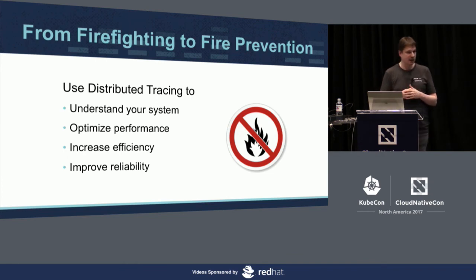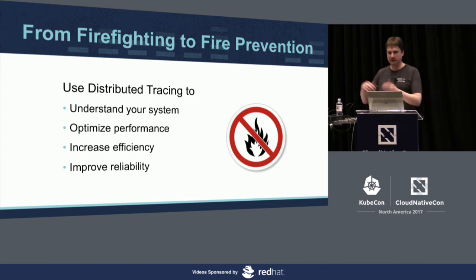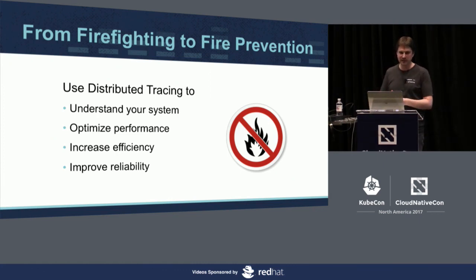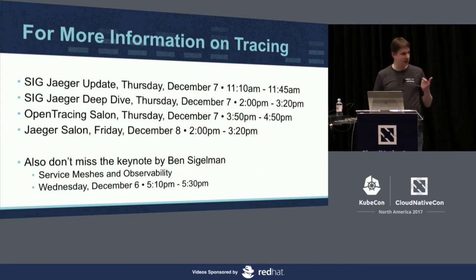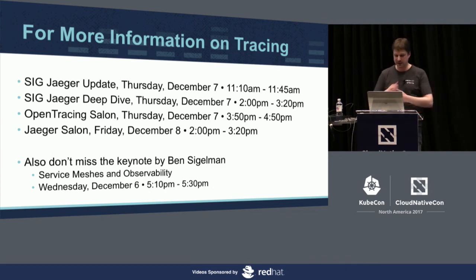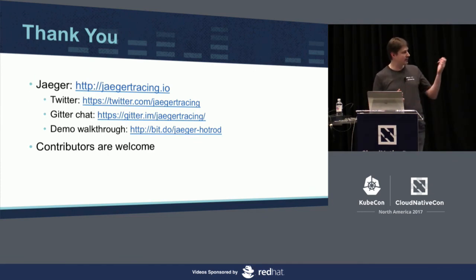My closing thought: monitoring has traditionally been a lot about firefighting — measure something, fire an alert, react. Tracing can do that too, helping with root cause analysis and troubleshooting. But tracing also provides a vast amount of data to do better than that — fire prevention: figuring out your capacity constraints, optimizing performance, identifying the actual bottlenecks in the architecture, and improving reliability overall. There are three more sessions on Jaeger specifically, an OpenTracing salon I highly recommend, and Ben Sigelman's keynote about tracing in meshes. All contributions to the open source project are welcome. Thank you.